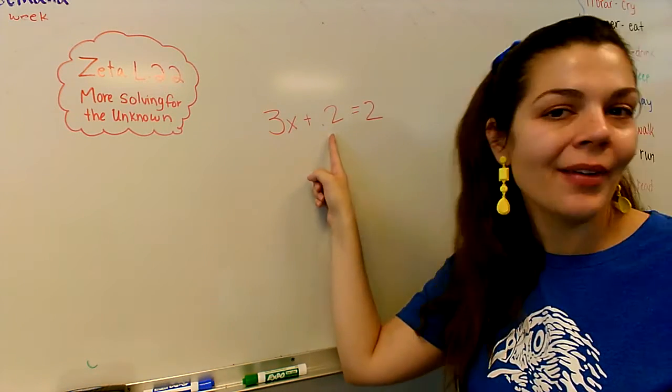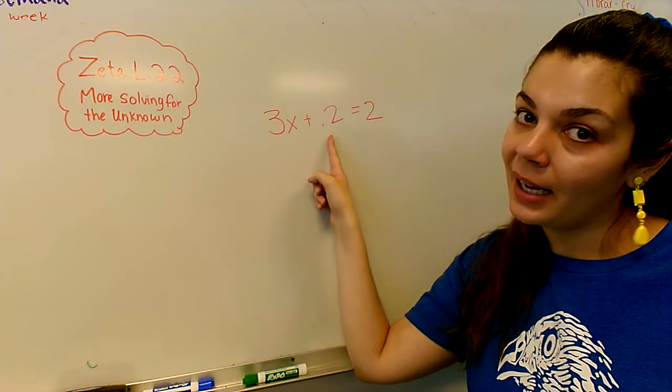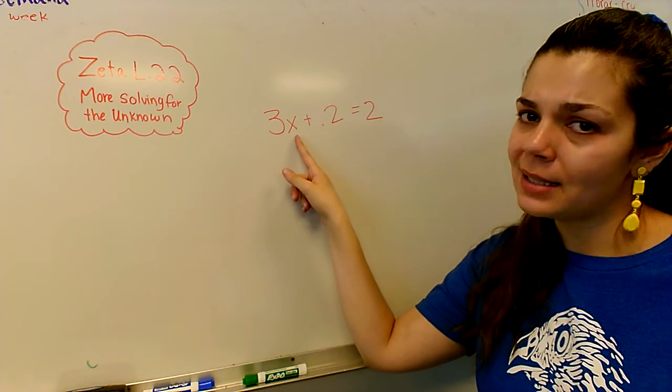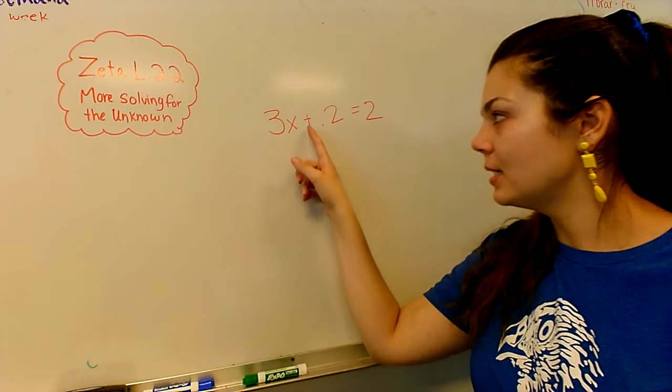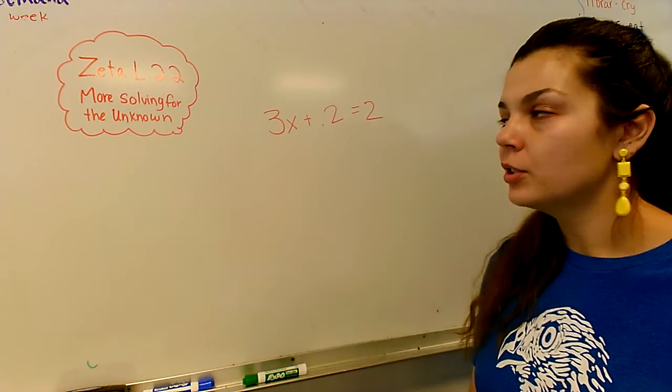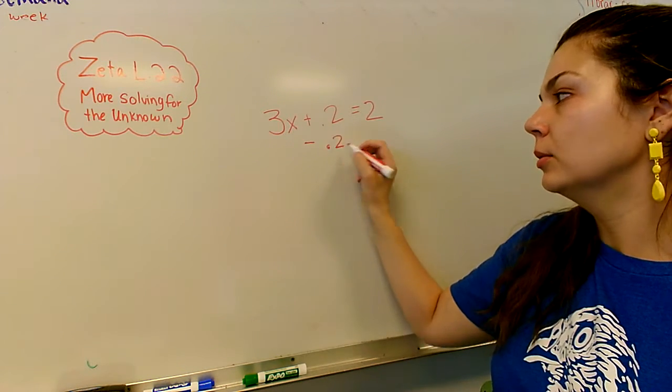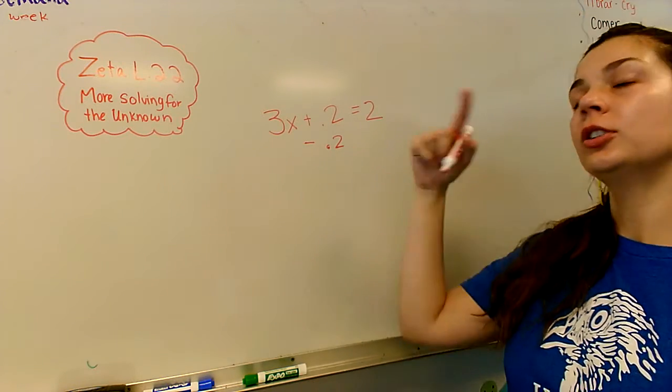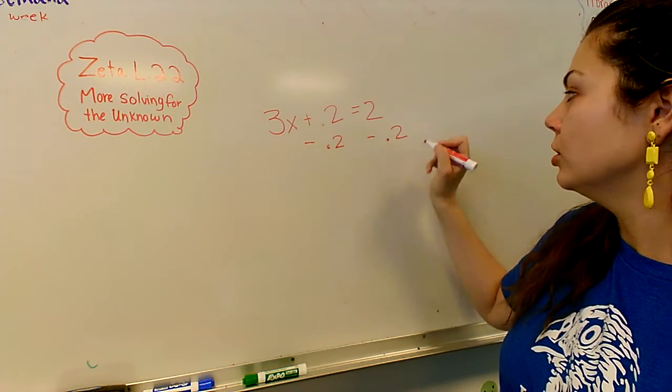This 0.2 here, he doesn't have anything to do with the x. He's not touching it, but he's on the same side. And if we want the x to be by itself, this 0.2 needs to go away. So this is a plus 0.2, so we are going to subtract 0.2. If we do it to one side, we have to do it to the other. Subtract 0.2.